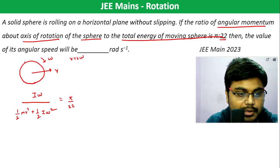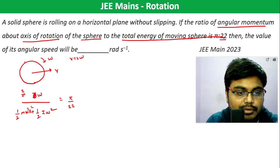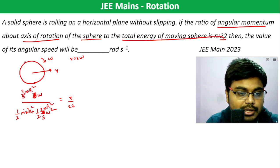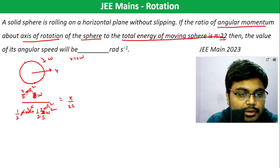Substituting: the moment of inertia of a solid sphere is I = 2/5 mr². Placing this into the expression, we get (2/5 mr²) in the numerator, and mr² terms cancel out through the denominator.